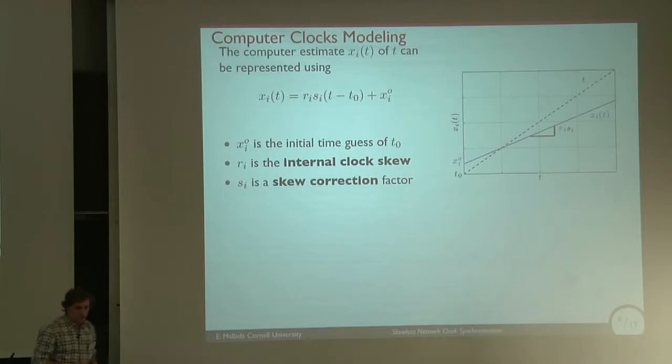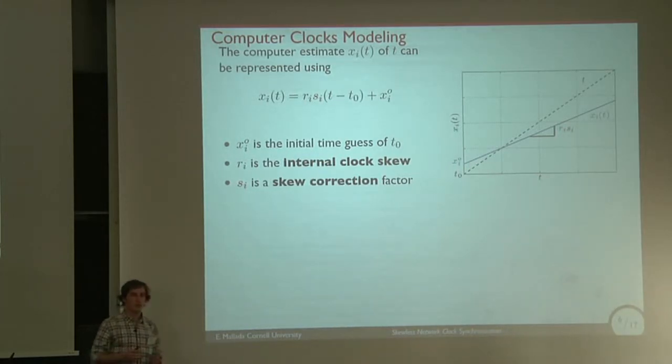This is a fairly simple model for a clock. When a computer starts at time zero, you have an initial guess of what's the estimate of the global time, x₀. We can see two different sources of error when you try to synchronize clocks. One is the initial guess x₀, and the other is the rate of the clock, the frequency of the clock. Here we use rᵢ to represent the internal clock skew. And sᵢ is this correction factor that is usually used to compensate this error.